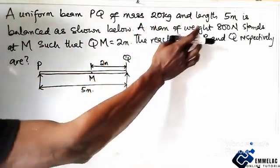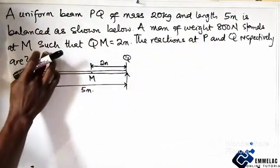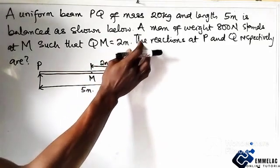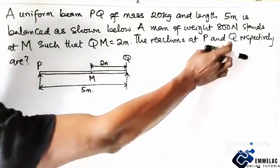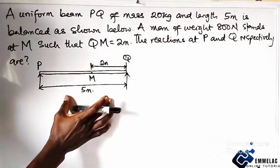A man of weight 800 newton stands at M such that QM is 2 meter. Now the reaction at P and Q respectively. Now here is the diagram given.